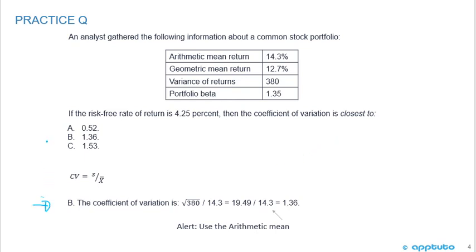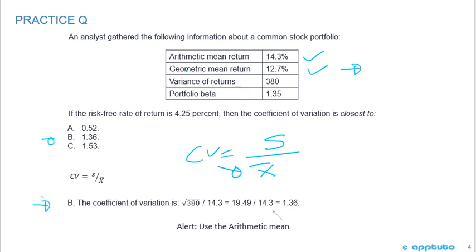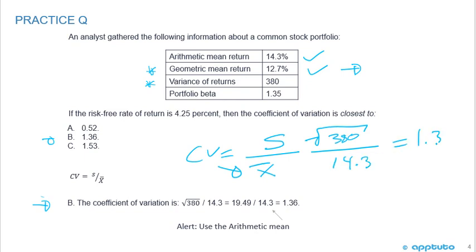The correct answer is B, 1.36. Remember it's the standard deviation over X bar. They've given you both the arithmetic mean and the geometric mean. Although for investment returns we typically use the geometric mean, for the coefficient of variation we use the arithmetic mean. Also, they gave you variance, not standard deviation, so we take the square root of 380 divided by 14.3, which gives us 1.36.